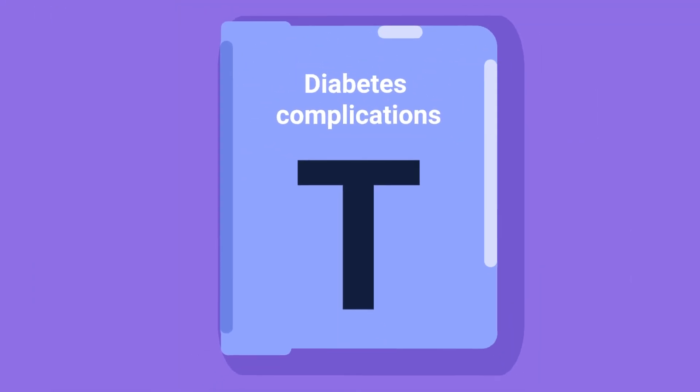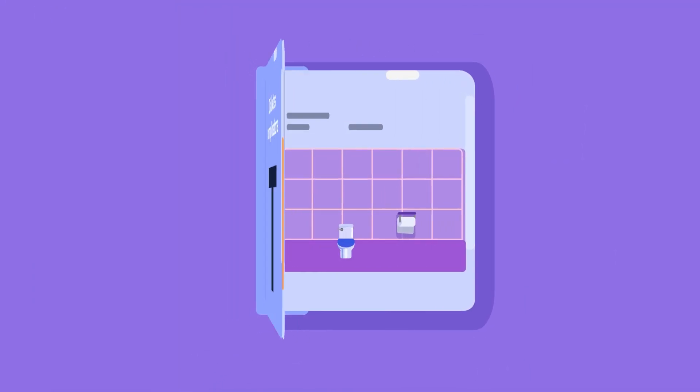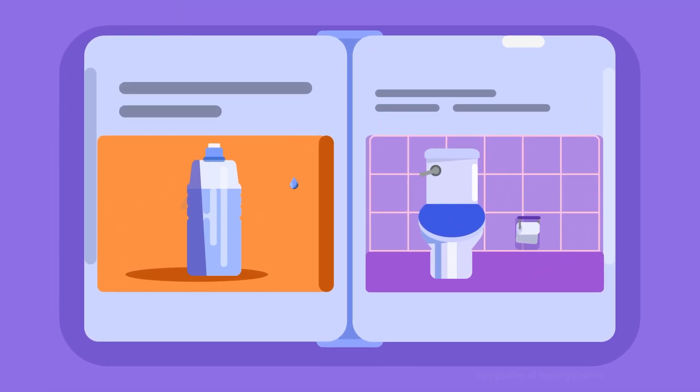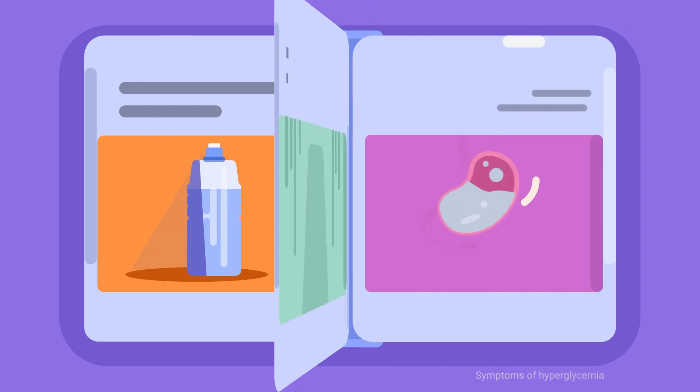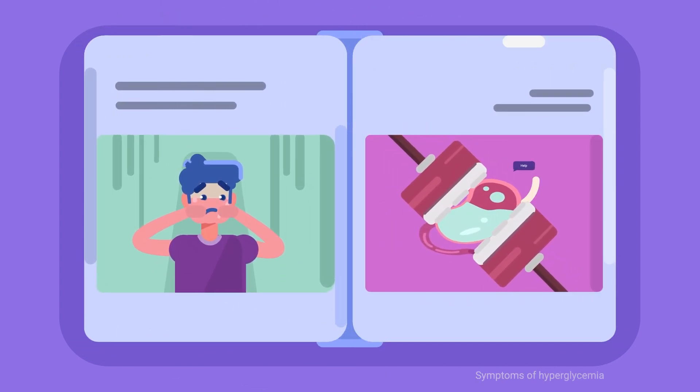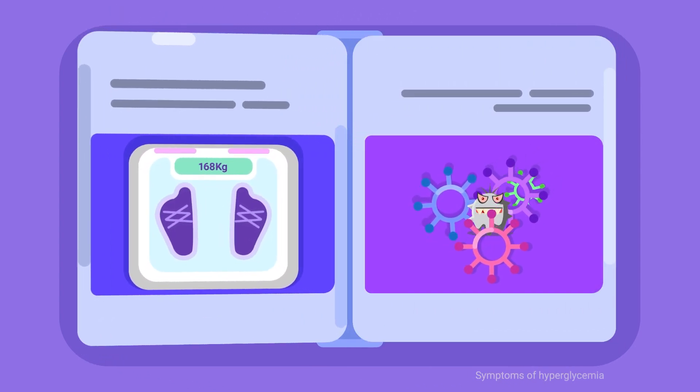Symptoms of hyperglycemia can include excessive thirst, an increased amount of urine, nausea and vomiting, stomach pain, tiredness, or weight loss.